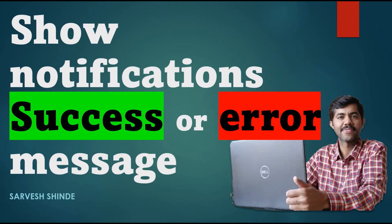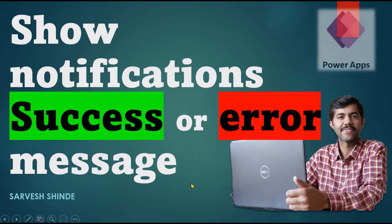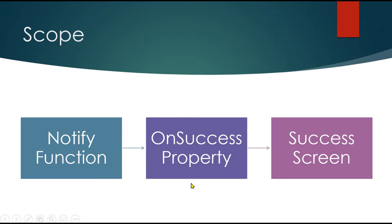In this video we'll be looking at how we can show notification messages — success messages, informative messages, or error messages — and what options are available in Power Apps. We'll be making use of the Notify function and the OnSuccess property for form controls, and we'll see how we can show or create a success screen.